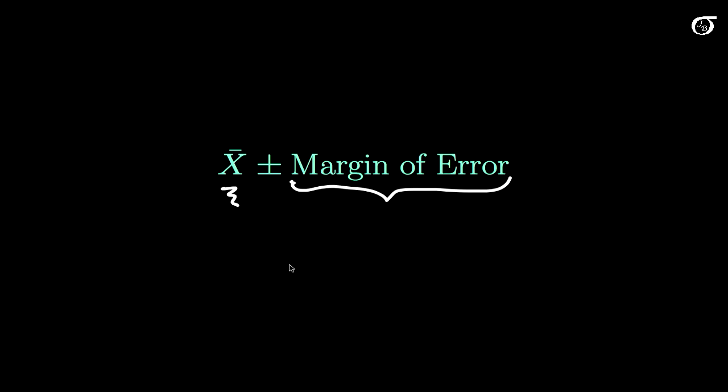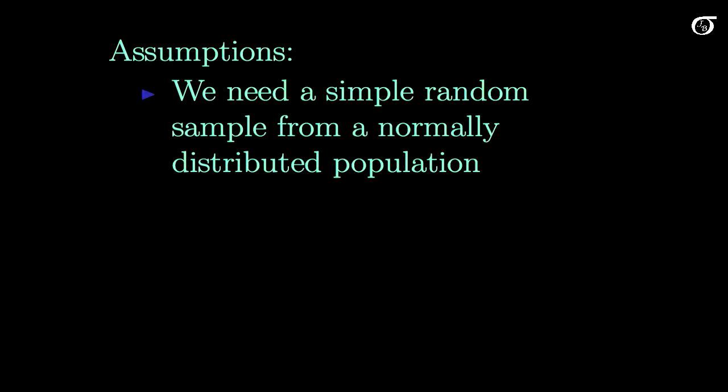The assumptions in this particular setting are going to be that we have a simple random sample from a normally distributed population. That normally distributed population part is going to become less important as we get a larger sample size due to the central limit theorem, but it is still an assumption here that we're working on.